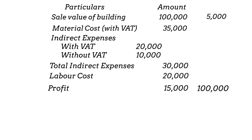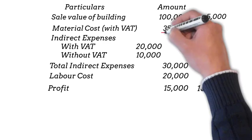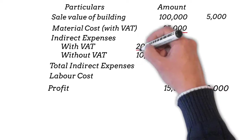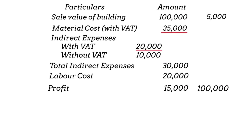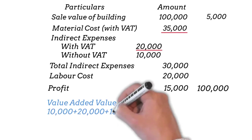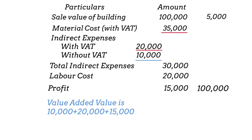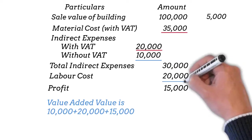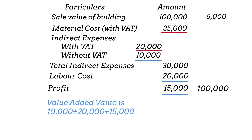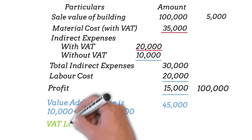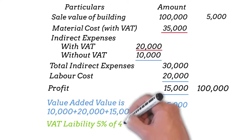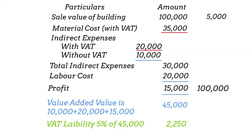Let us assume that VAT was paid on material cost of 35,000 and on 20,000 indirect expenses. The value added amount is 10,000 indirect expenses for which VAT was not paid, 20,000 labour cost, and 15,000 profit, which comes to 45,000. The VAT liability of the builder on this building is 5% of 45,000, that is 2,250.